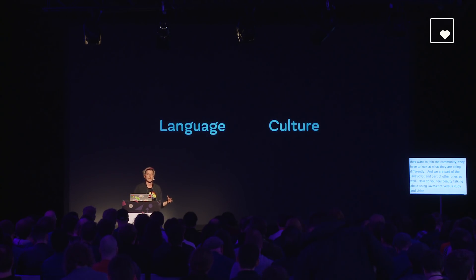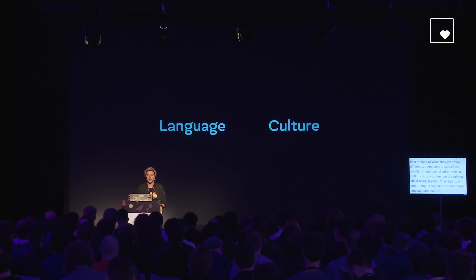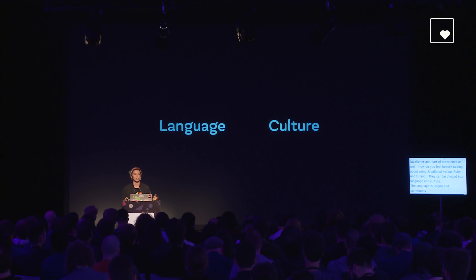We've got language and culture. The language things — that's jargon, community-wide in-jokes, and that kind of stuff. The cultural things — that's our approach to open source, our diversity strategy, how we go about solving problems, communication problems as well as programming problems. Language can also be described as linguistic factors, and cultural ones can be considered social factors. So if we mush these two together, we get sociolinguistics.